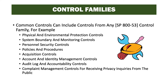All of these requirements are conducted by the common control provider through the RMF. Common controls can include controls from any of the control families from NIST Special Publication 853. Examples include physical environmental protection controls, system boundary and monitoring controls, personal security controls, policies and procedures, acquisition controls, account and identity management controls, audit log and accountability controls, and complaint management controls for receiving privacy inquiries from the public. These are all examples of control families that can have inheritable controls.